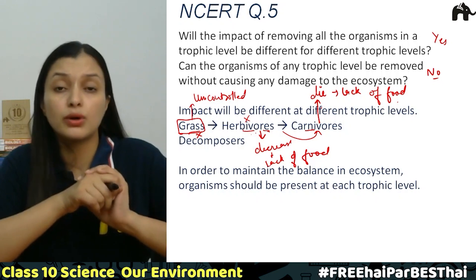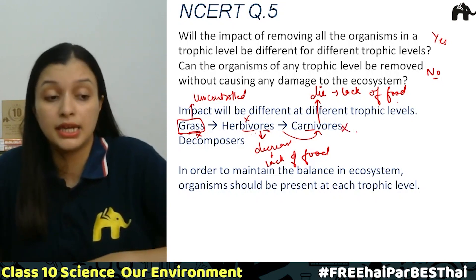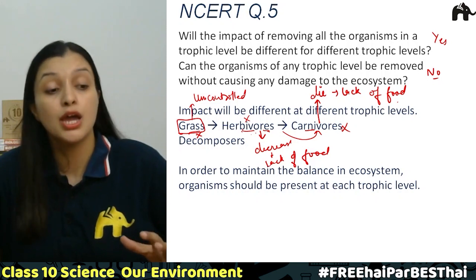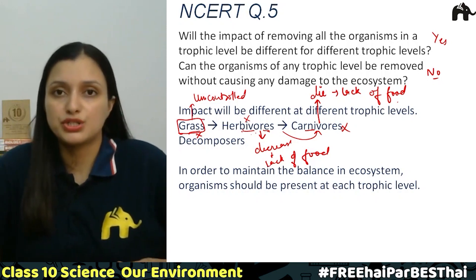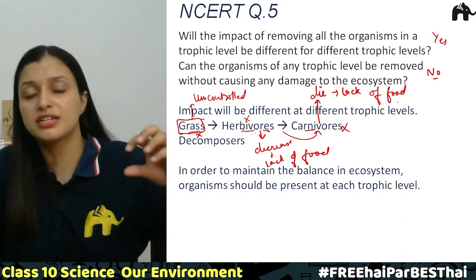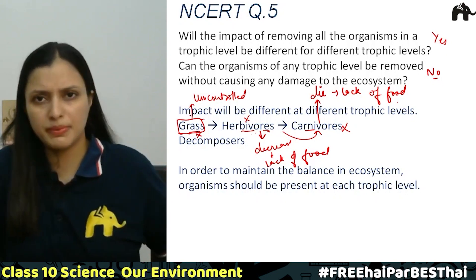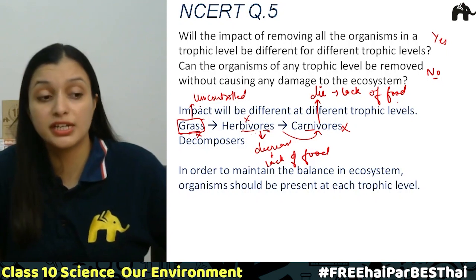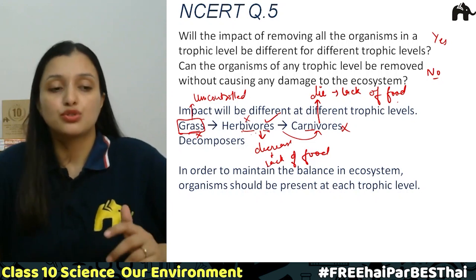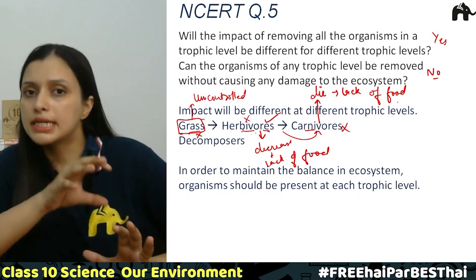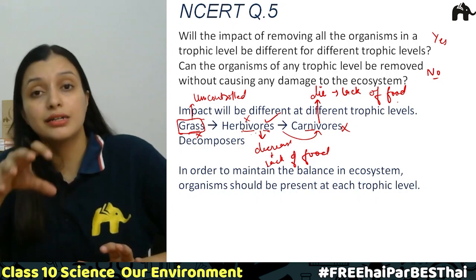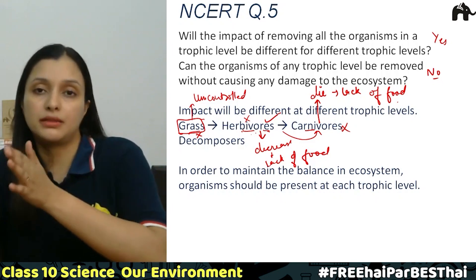अगर carnivores हटा दें तो herbivores को खाने वाला कोई नहीं बचेगा — वो number में बहुत बढ़ते जाएंगे और grass की population पर बहुत ज़्यादा pressure आ जाएगा। सारे plants खत्म हो जाएंगे और खाना किसी तरह से खत्म हो जाएगा, तो ultimately herbivores भी मरना शुरू हो जाएंगे।